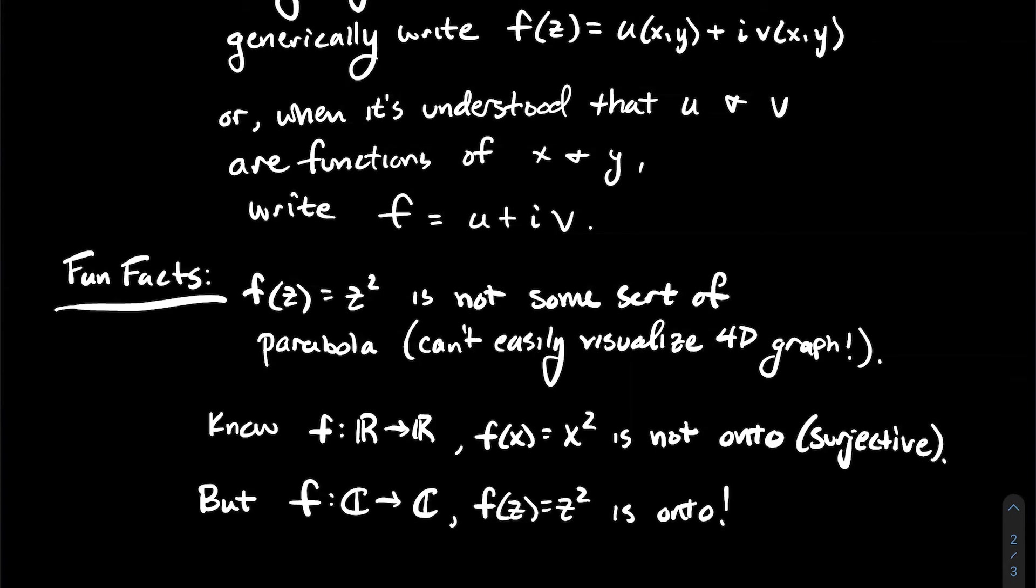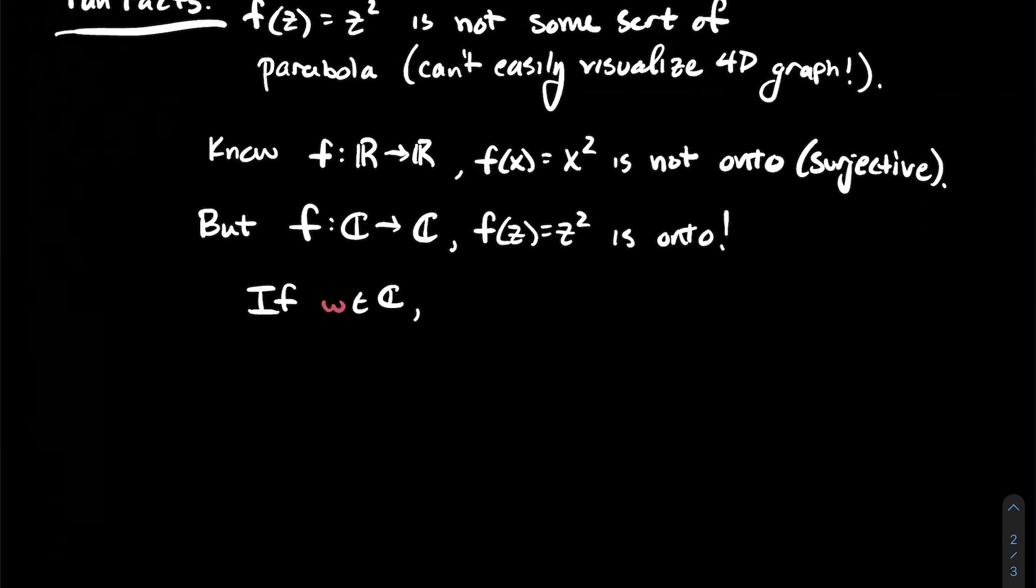But when I think about this complex value function or this function of a complex variable, f of z equals z squared, it is surjective. It is onto. And this is pretty cool. And let's talk about why we can actually prove it. It's not too hard.